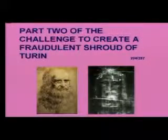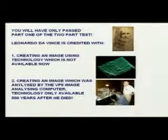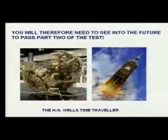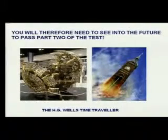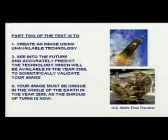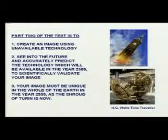Here's an even more difficult challenge: Leonardo da Vinci is credited with two things — first, creating an image using technology not available even now in 2009, and second, creating an image which was analysed by the VP8 image analysing computer, technology only available 500 years after he died. So you'd have to see into the future to pass that test. Part two is to create the image using unavailable technology, then accurately predict the technology available 500 years from now — in the year 2509 — to scientifically validate your image, which must be unique on all the Earth in 2509, just as the Shroud is now.